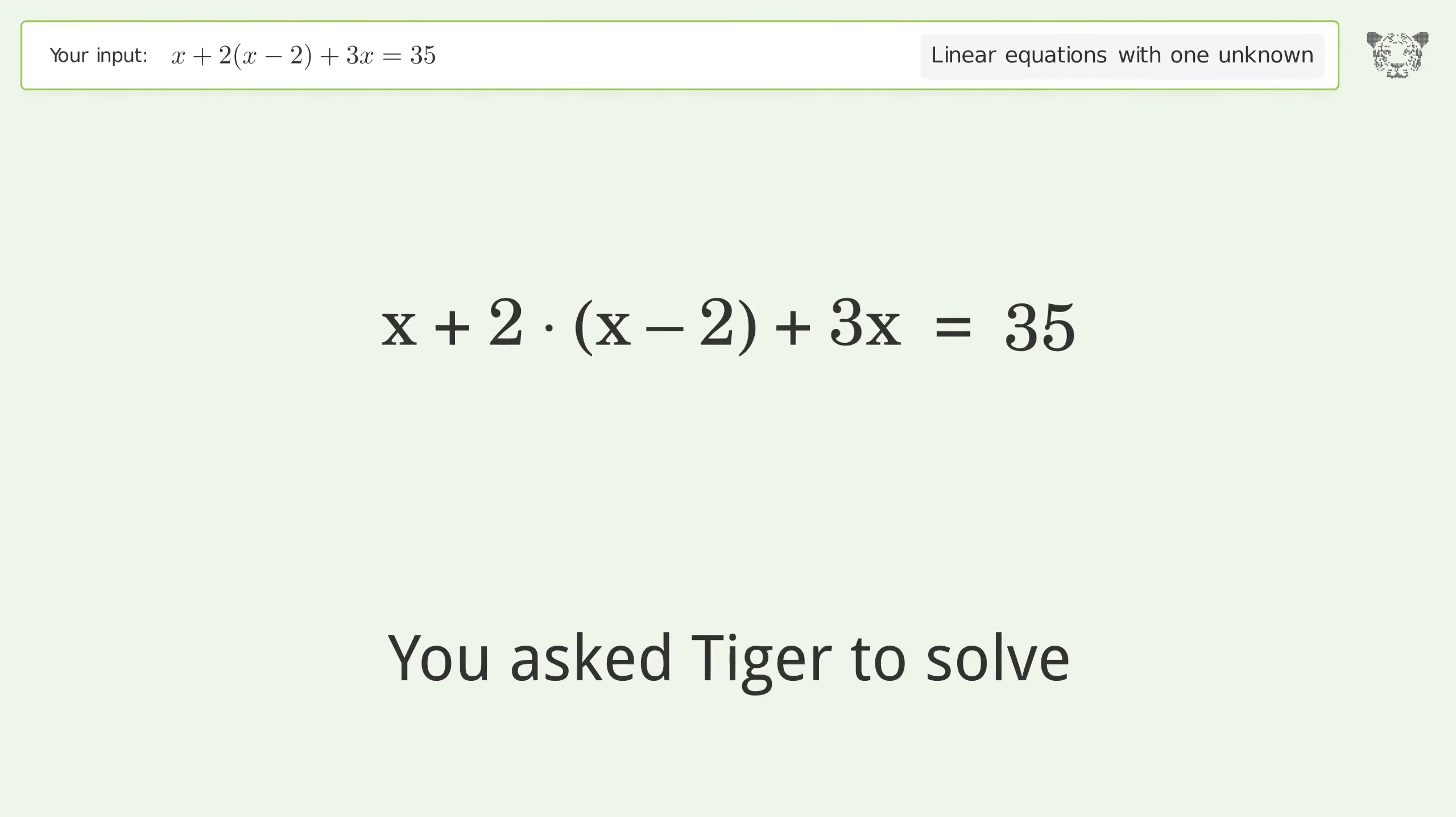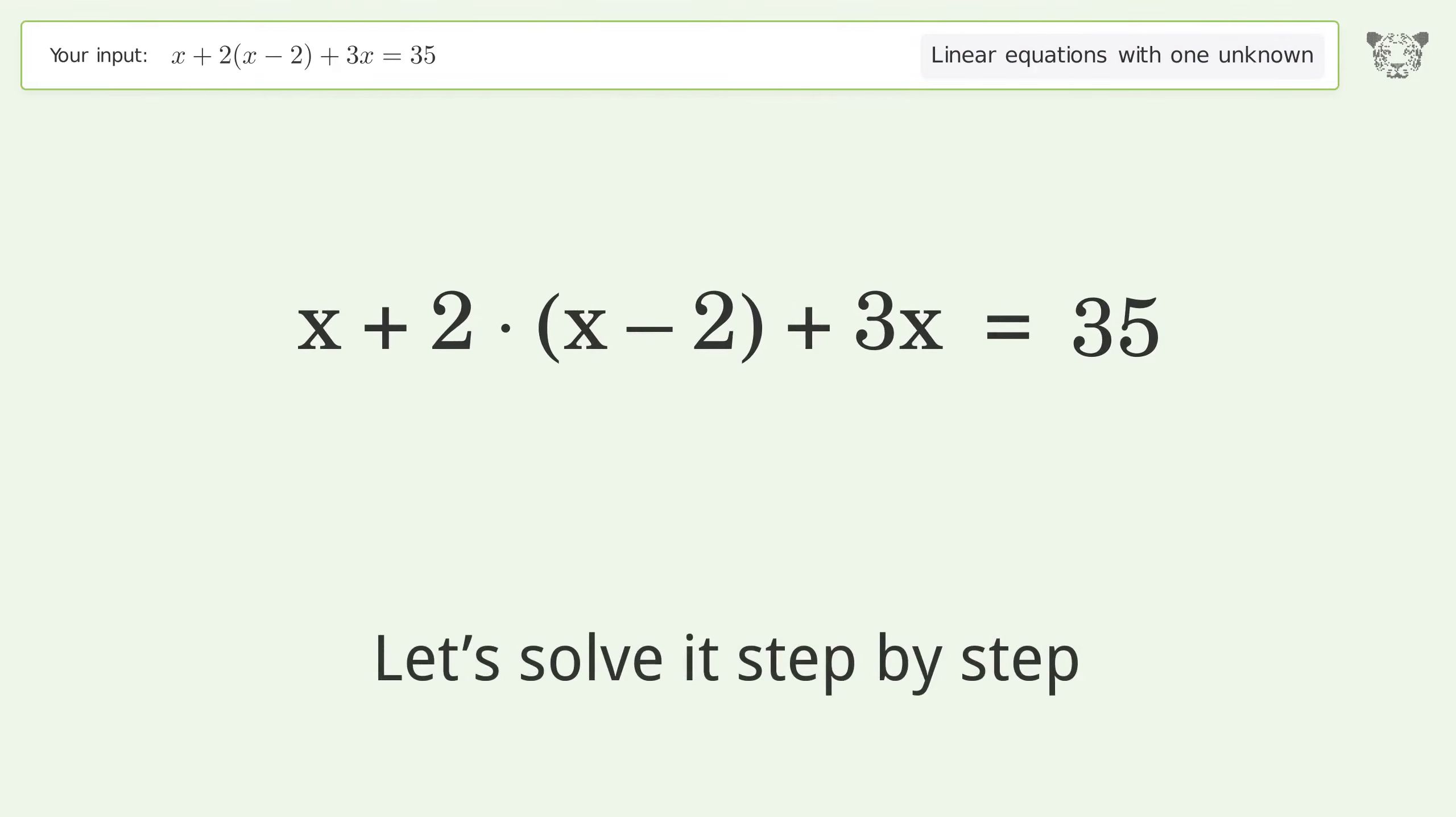You asked Tiger to solve this linear equation with one unknown. The final result is x equals 13 over 2. Let's solve it step by step. Simplify the expression and group like terms.